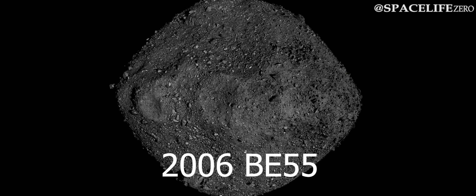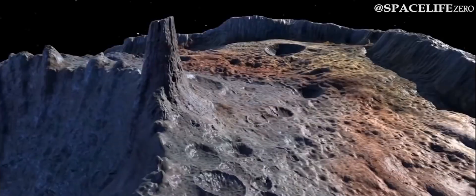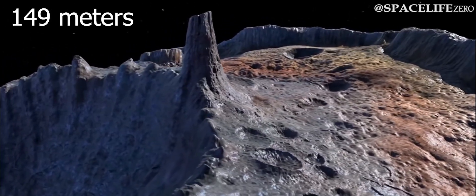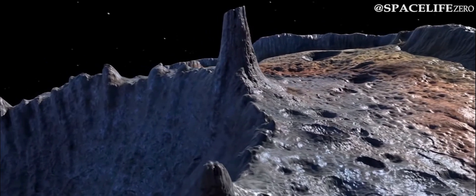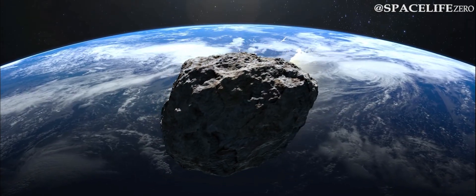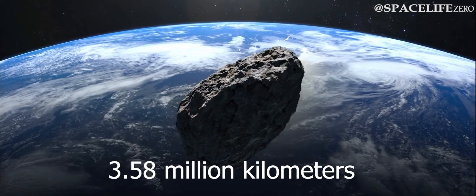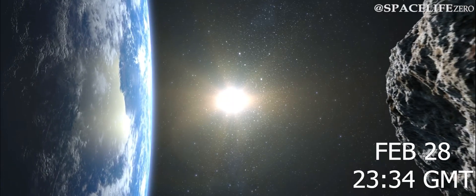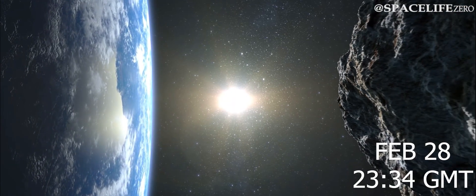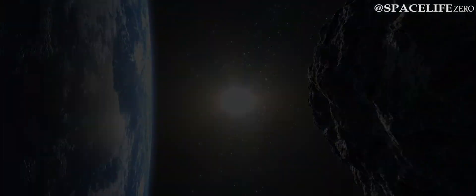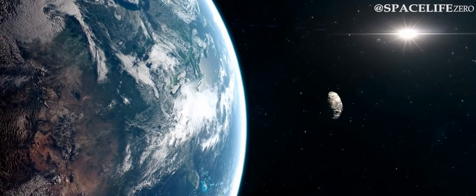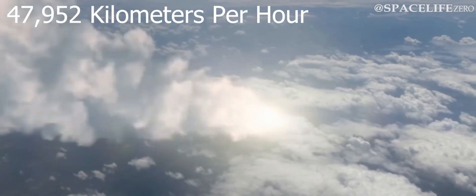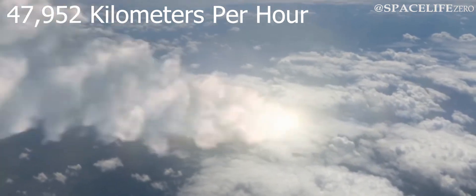Asteroid 2006 BE55. The 149-meter huge asteroid named 2006 BE55 will also be nearing Earth at a distance of 3.58 million kilometers on February 28, at 2334 GMT. The asteroid is heading towards our planet at a speed of 47,952 km per hour.